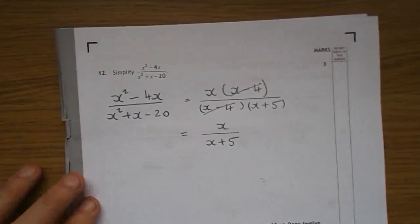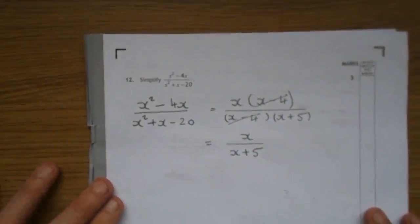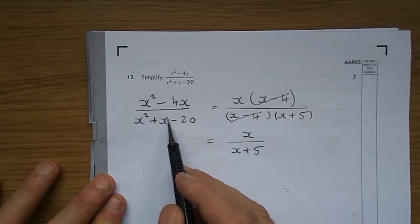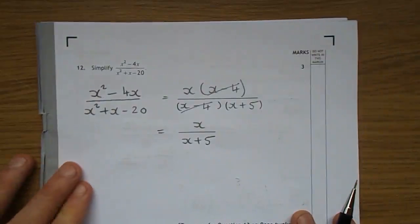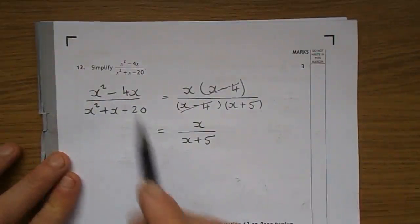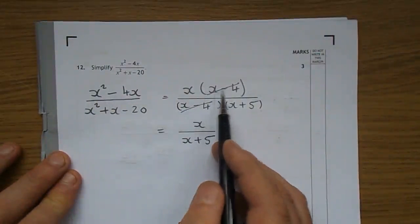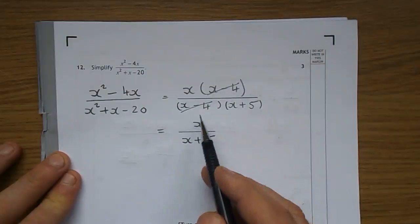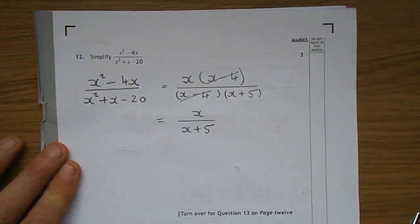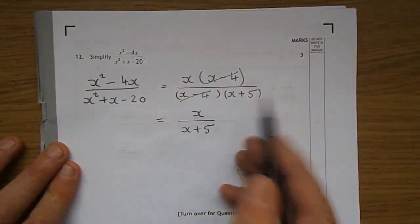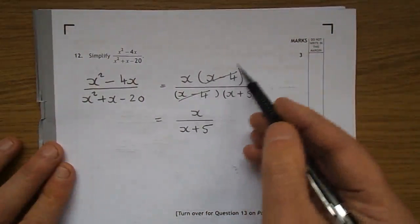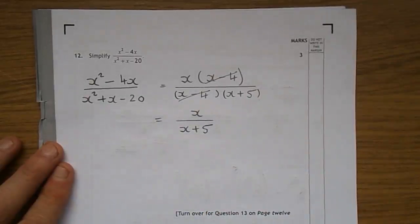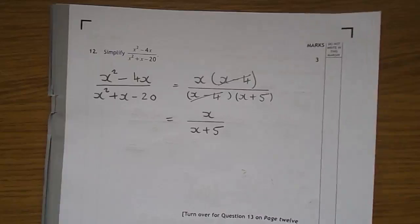On to question 12. We did a few of these in practice. You factorize the top, factorize the bottom, something should cancel. x squared take 4x has a common factor: that's x times (x take 4). x squared plus x take 20 is (x take 4) times (x plus 5). The (x take 4)s cancel and you're left with x over (x plus 5).